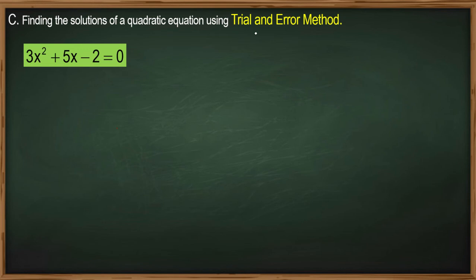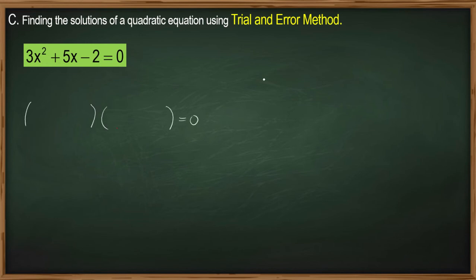We have another strategy of solving quadratic equations by factoring, and that is by using the trial and error method. This method can be used when the leading coefficient of x squared is not 1, and the sum of the factors of the constant term is not equal to the leading coefficient of the linear term. First, we write two parentheses where we are going to write our factors, equals 0, and then prepare our working area.